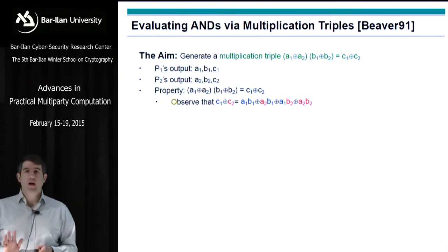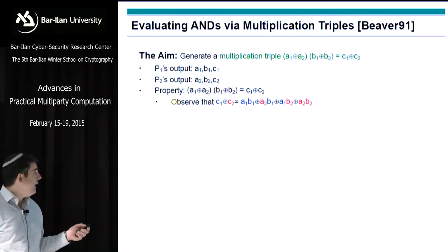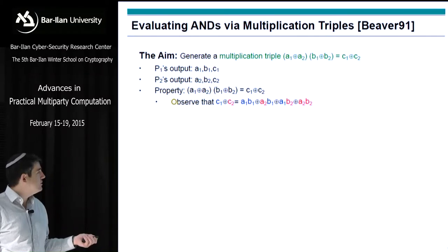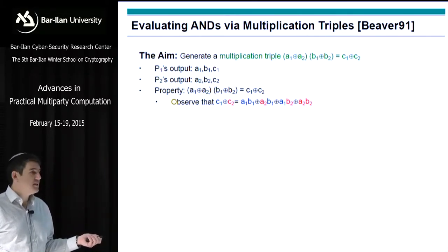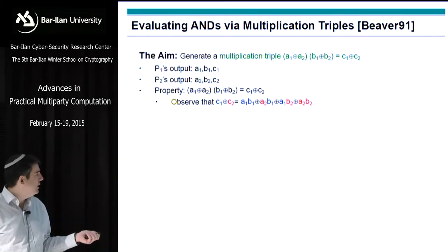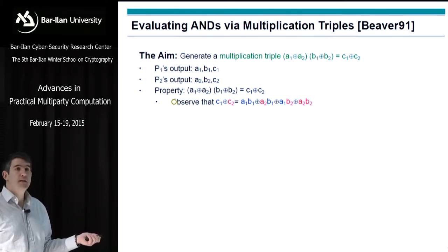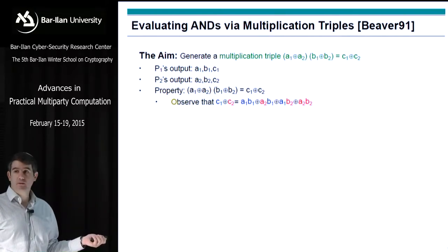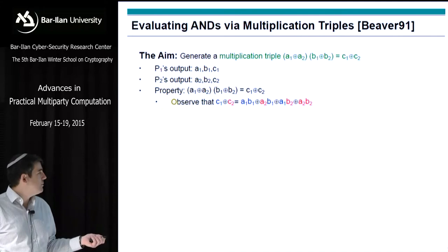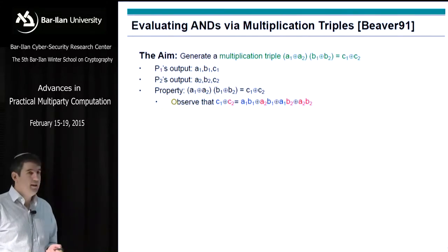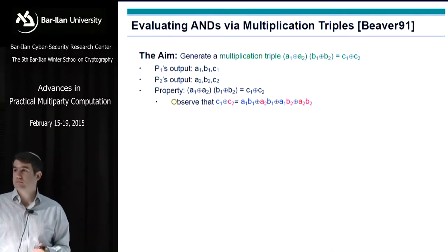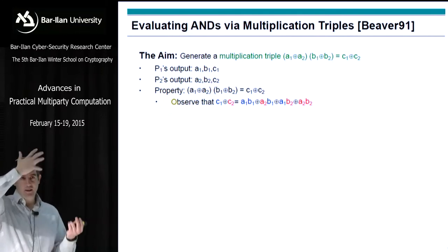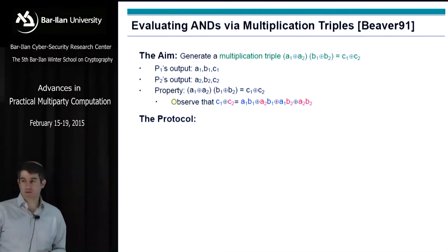When we multiply it out, C1 XOR C2 equals A1·B1 plus A2·B1 plus A1·B2 plus A2·B2. Note that A1·B1, P1 can compute by himself, and A2·B2, P2 can compute by herself. They only need to collaborate to compute A2·B1 and A1·B2, because that involves information from both of them.